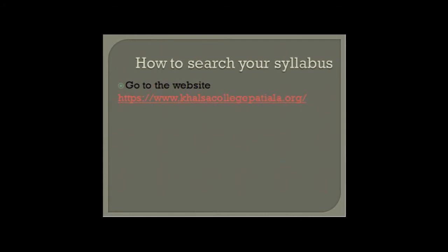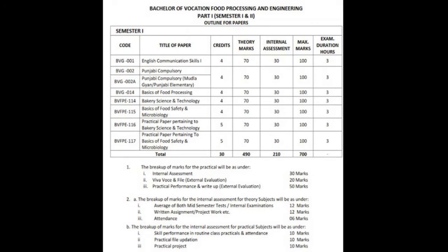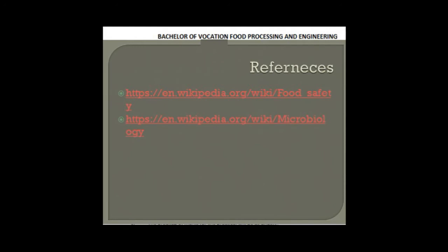Now, coming to the syllabus. You can go to the website — in the coming video I will tell you how to find your syllabus. Here is your syllabus; I have taken some screenshots. This is your scheme. In the first year, you are going to study English Communication Skills 1, Punjabi Compulsory, and Punjabi Elementary for those students who have not studied Punjabi in their 10th class. The third subject is Basics of Food Processing, the fourth is Bakery Science and Technology, and this is my subject — Basics of Food Safety and Microbiology. You will have practicals worth five credits. Your theory exam will be 70 marks and your internal assessment will be 30 marks.